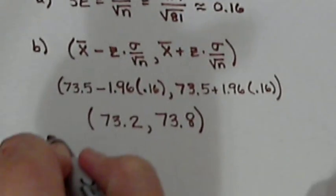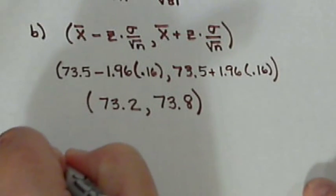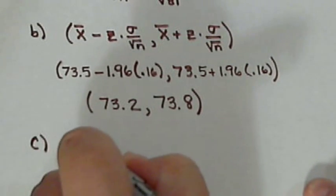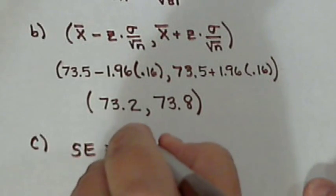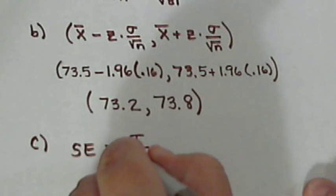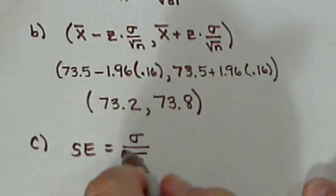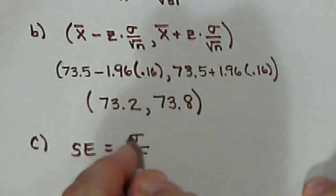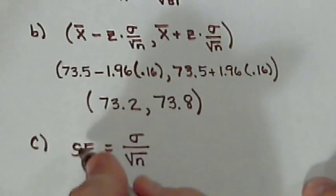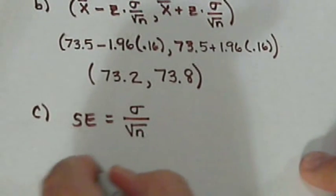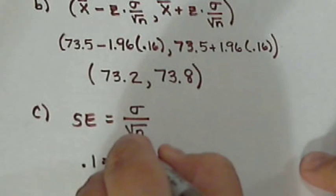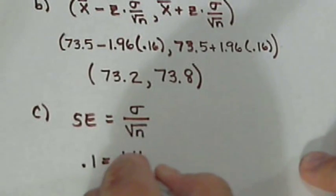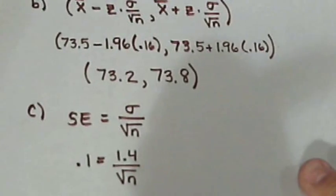Okay, the third problem says, suppose he wanted a standard error of 0.1. Remember right now the standard error is 0.16. So if he wanted to lower his margin of error, how many rounds of golf would he have to play to get an overall error to 0.1? Well this time we know what the standard error is. It's 0.1. His standard deviation is still 1.4, but now we want to know what the sample size would be.